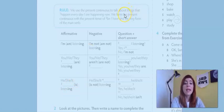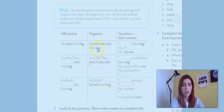What happens in the negative form? I'm not listening. The same thing if we have you or he, she and it. You, we or they aren't listening. He, she or it isn't listening.